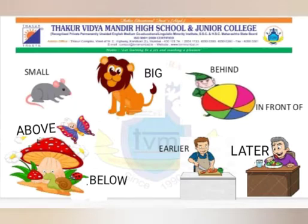Small and Big: The Rat is Small. The Lion is Big. Behind and In Front Of: The Clown is Behind The Ball. The Ball is In Front Of The Clown.